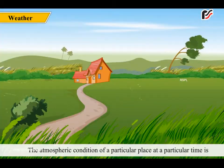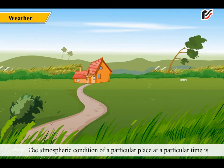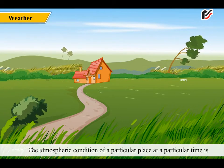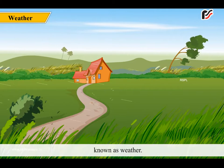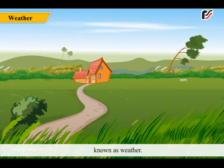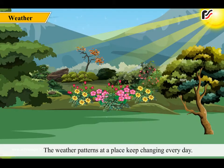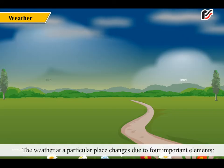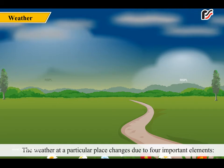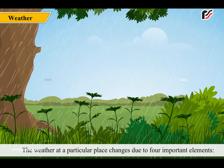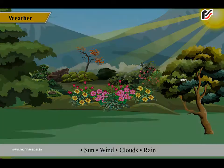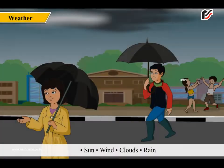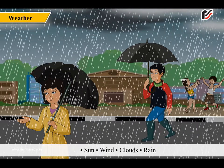The atmospheric condition of a particular place at a particular time is known as weather. The weather patterns at a particular place change due to four important elements: sun, wind, clouds and rain.